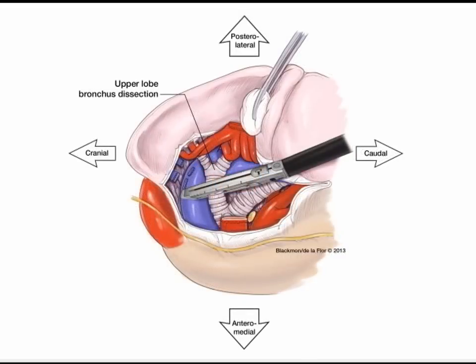Once you have taken the majority of the anterior and apical pulmonary artery branches and stapled the pulmonary vein, you will then encircle, staple, and divide the left upper lobe bronchus. Typically this is encircled, stapled, and divided prior to exposing any of the remaining pulmonary arteries.